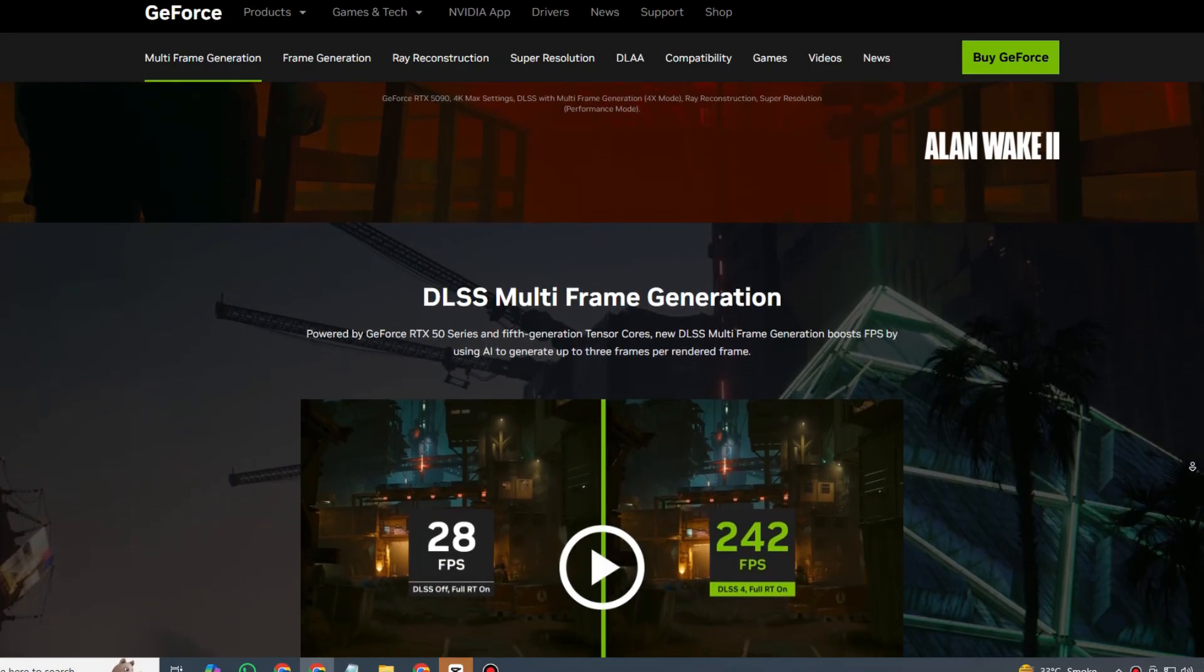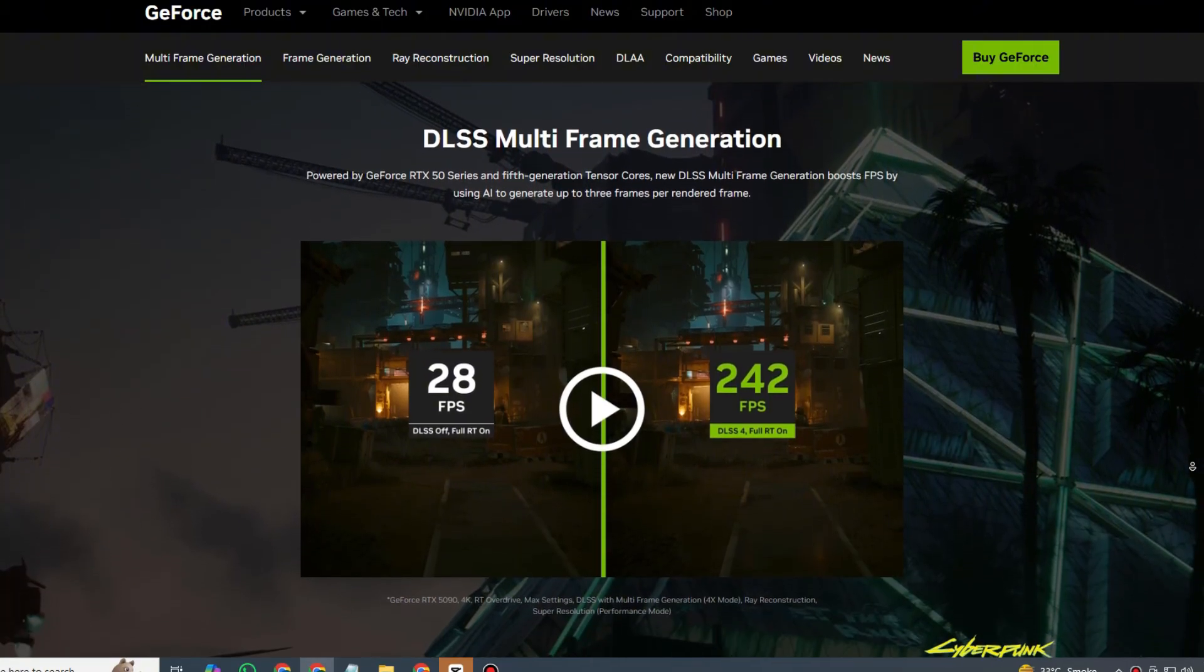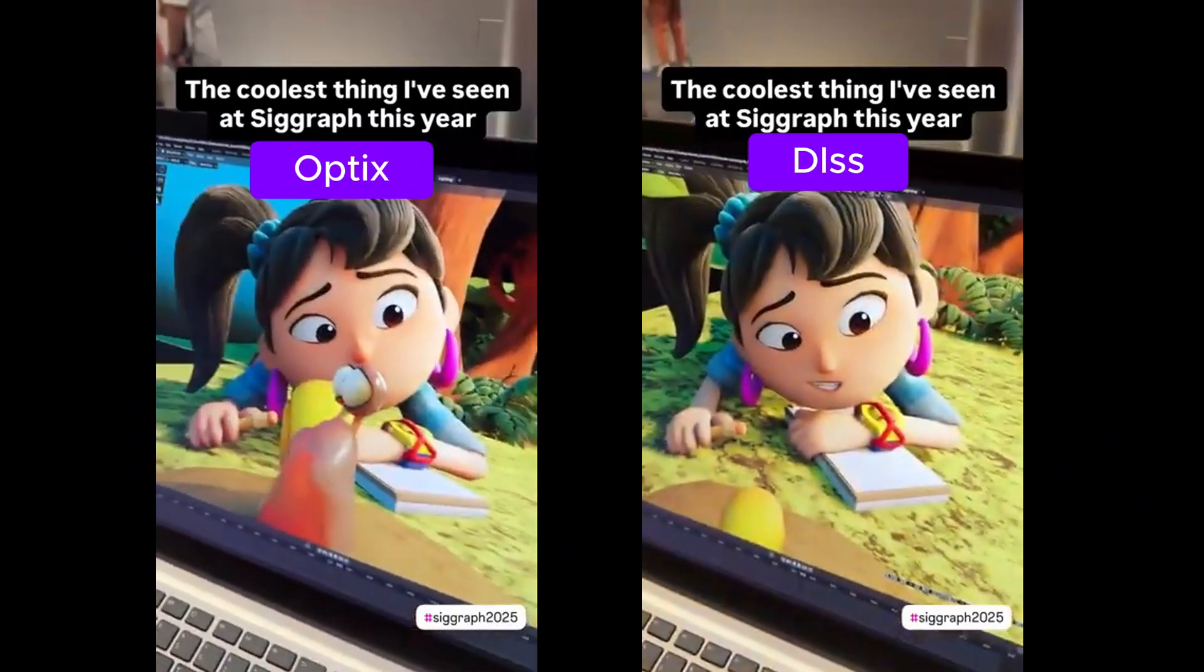Now what exactly is DLSS? Simply put, it's a technology that uses your graphics card's artificial intelligence. It processes the scene in lower resolution and then smartly upscales it into high resolution.